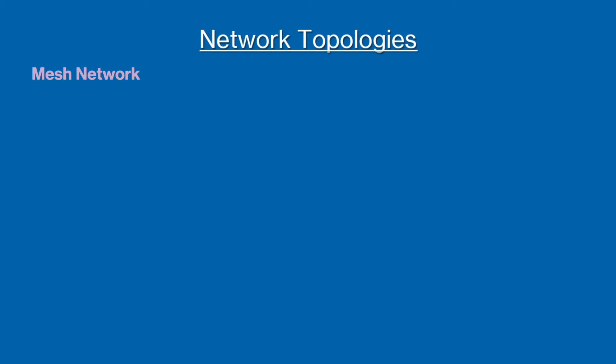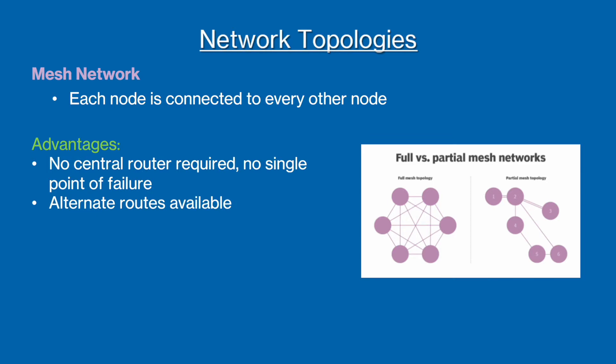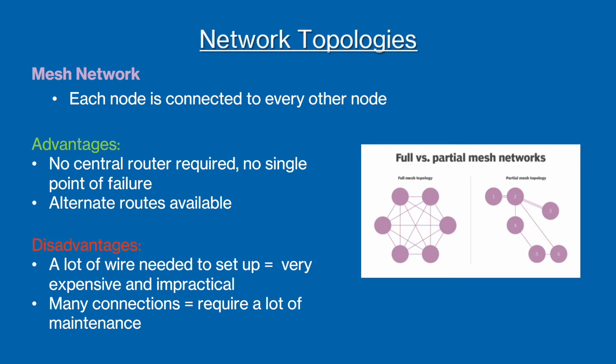The second network topology is called a mesh topology, where each node is connected to every other node. In a mesh network, all nodes are involved in the transmission of a message, and there are multiple paths between the devices, so no central switch is required. This is beneficial as it means that there is no single point of failure within the network. However, a lot of wire is needed to connect all the devices to all the other devices, making mesh networks expensive and difficult to set up.